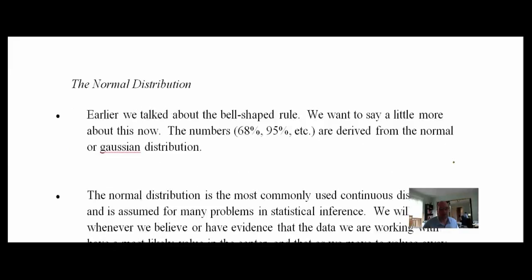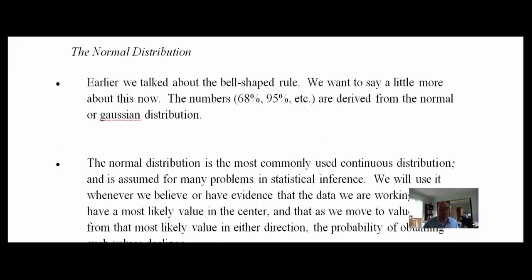Let's move on. We're going to talk about the normal distribution, which we've already discussed. We know the empirical rule — the 68-95 rule — where if we go out certain standard deviations away from the mean, a certain percentage of all observations fall in there. When we say percentage, we're really talking about probability — the probability of something happening.